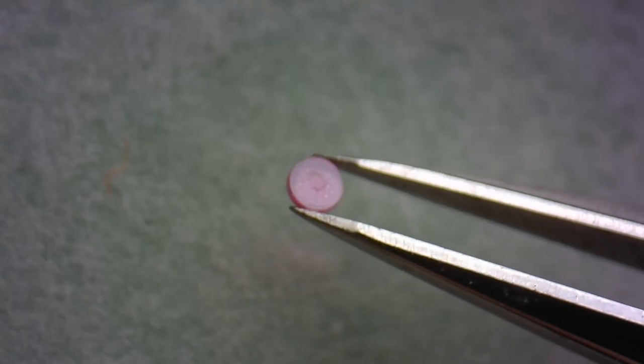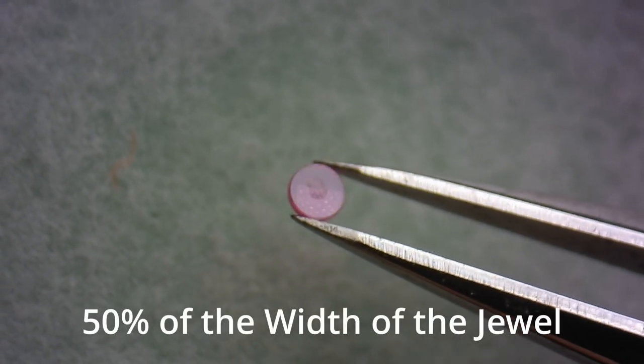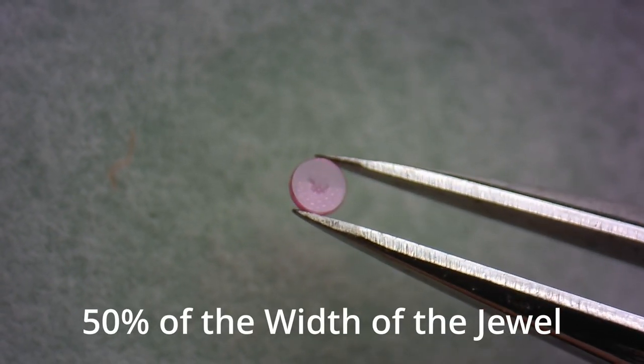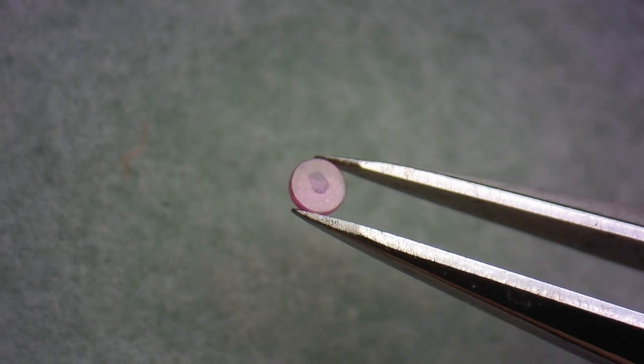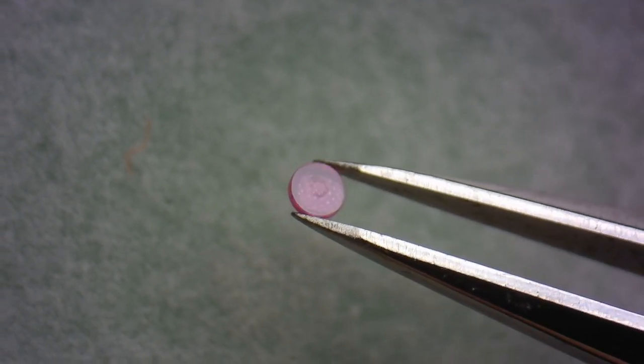When looking at the oil in the middle of this jewel, the drop of oil should occupy about 50% of the surface of the jewel. Looking at this dot of oil, it's a little bit too small, so we need to add just a touch more oil.